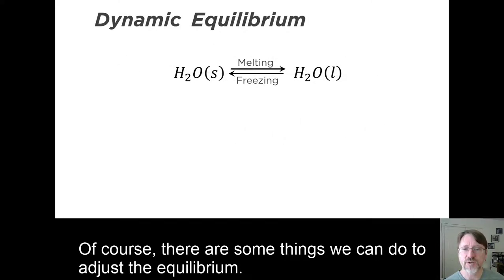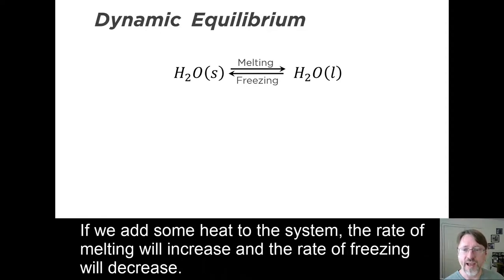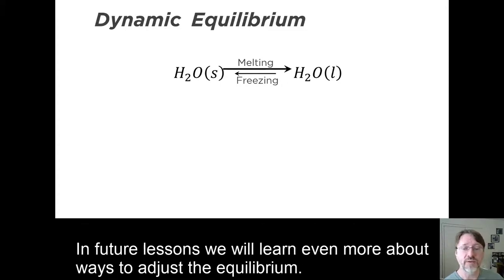Of course, there are some things we can do to adjust the equilibrium. If we add some heat to the system, the rate of melting will increase, and the rate of freezing will decrease. In future lessons, we will learn even more about ways to adjust the equilibrium.